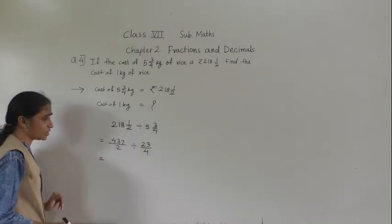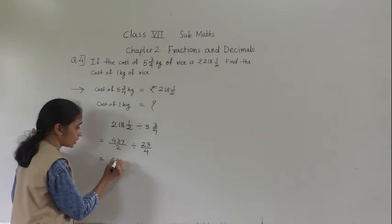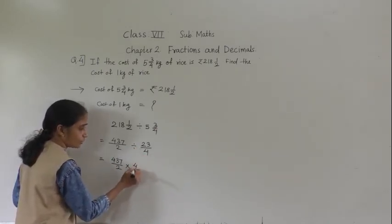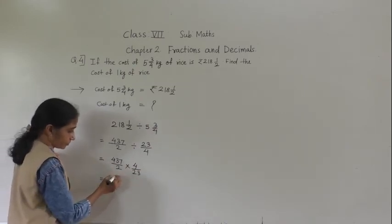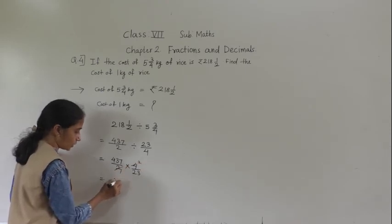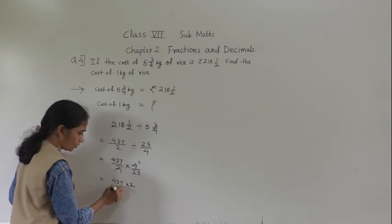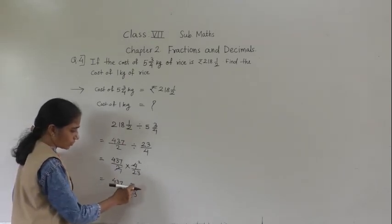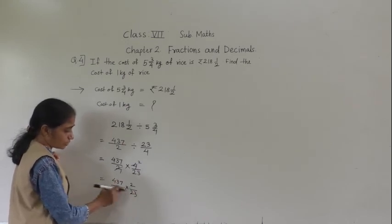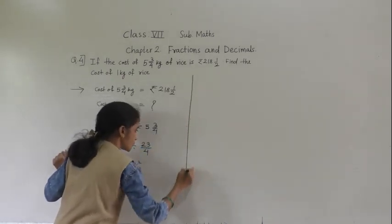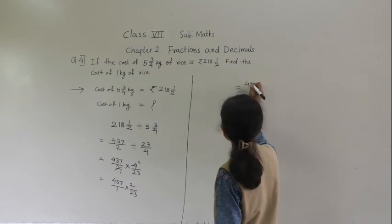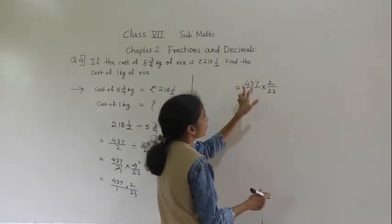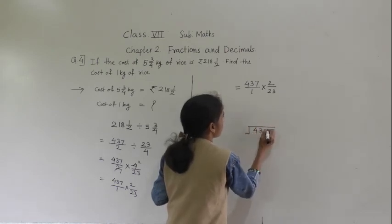Division is given, so we take the reciprocal of the second fraction. 437 upon 2 multiplied by reciprocal of 23 upon 4, which is 4 upon 23. Now do the lowest term: 2 ones are 2, 2 twos are 4. So 437 upon 1 multiplied by 2 upon 23. Divide 437 by 23.